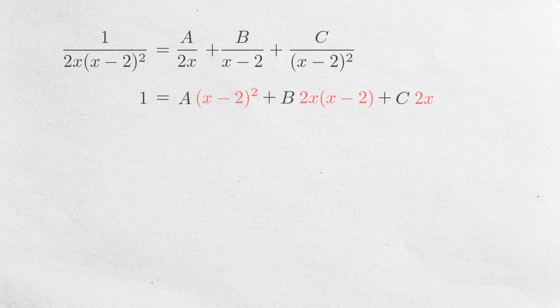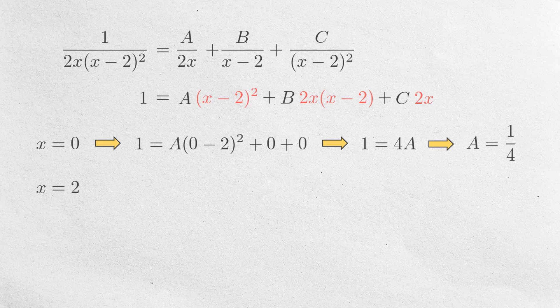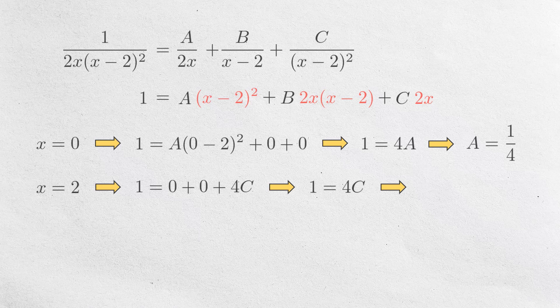To find the constants A, B, and C, we can choose some values and plug into x. We can let x be 0, then the terms where B and C will become 0, meaning that the equation has only A as the unknown. And we get 4A equals 1, so A equals 1 fourth. Then let x be 2, which will make the terms where A and B disappear. So, 4C is equal to 1, gives C equals 1 fourth.